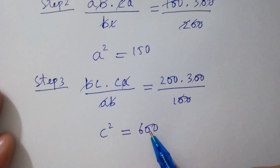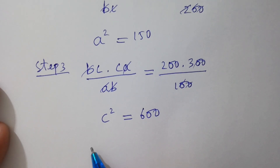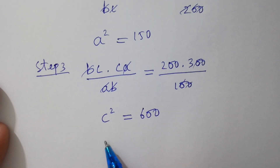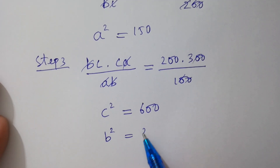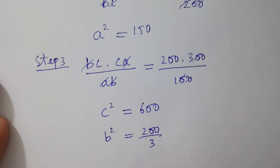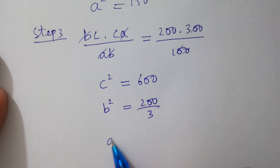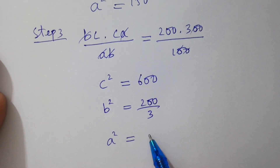So we have: a² = 150, b² = 200/3, and c² = 600.